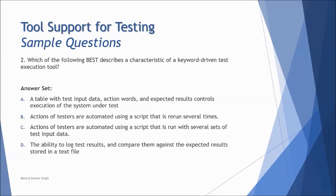Let's look at the next one. Which of the following best describes a characteristic of a keyword-driven test execution tool? This is how they can ask you a question from the special consideration for test execution tool, and that is keyword-driven. Option A: the table with test input data, action word, expected result, control execution of the system under test. And yes, action word is also known as keyword. So that's a synonym for keyword, and that would be the most relevant option as of now. So the right answer here is A, which deals with the right specific test definition to the keyword-driven test.